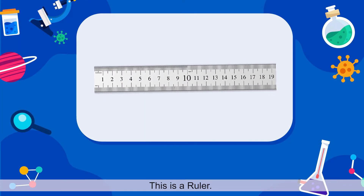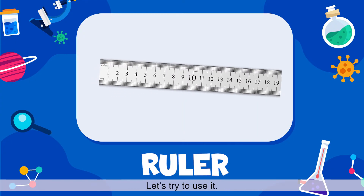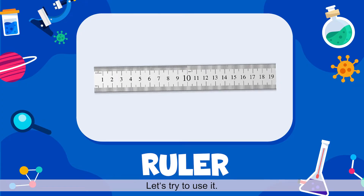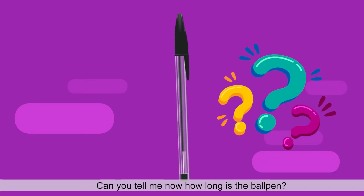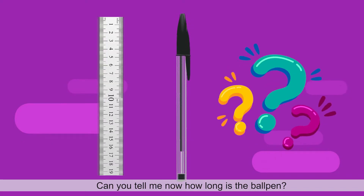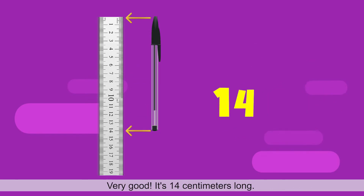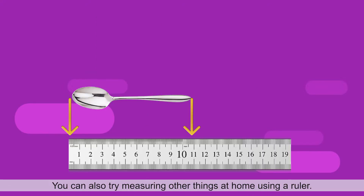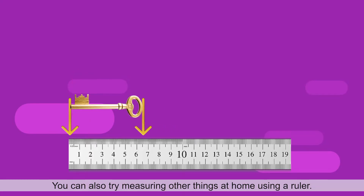This is a ruler. This tool helps us measure the length of objects. Let's try to use it — let us measure this ball pen using the ruler. Can you tell me how long the ball pen is? Very good! It's 14 centimeters long. You can also try measuring other things at home using a ruler.